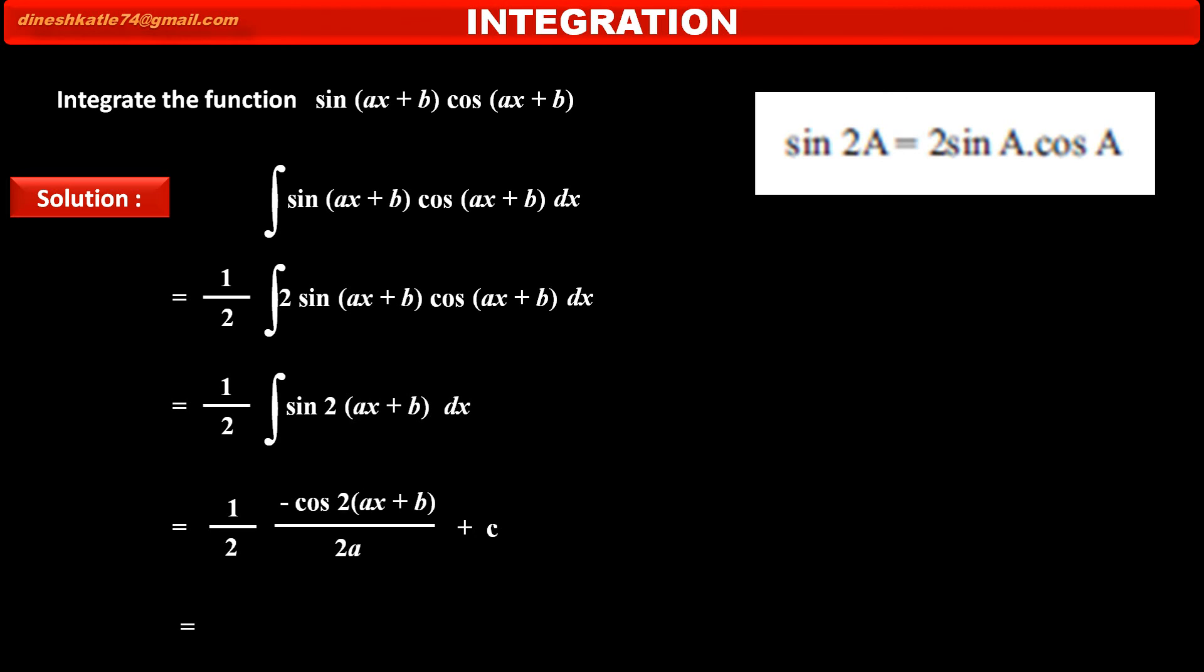Simplifying the above, we get minus cos(2(ax+b)) upon 4a, plus constant term c. This is the integration of the given function.